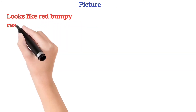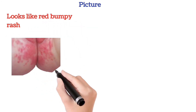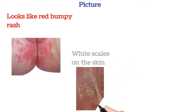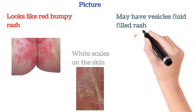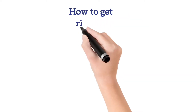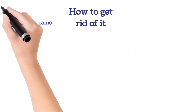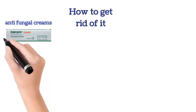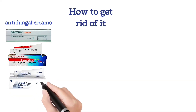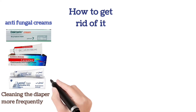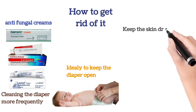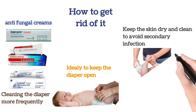The rash looks red and bumpy in appearance, with white scales on the skin, and may have vesicles — fluid-filled rash appearance. To treat it: apply anti-fungal baby rash creams, clean the diaper area more frequently, ideally keep the diaper open, and keep the skin dry and clean to avoid secondary infection.